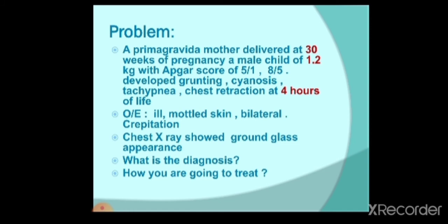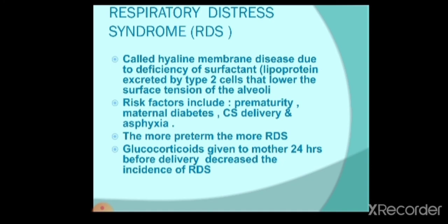Third problem: a primigravida mother delivered at 30 weeks of pregnancy, a male child weighing 1.2 kilos with an APGAR score of 5 at 1 minute and 8 at 5 minutes, who developed grunting, cyanosis, tachypnea, and chest retraction at 4 hours of life. Examination showed mottled skin, bilateral crepitations, and chest X-ray showed a ground glass appearance. This is a typical case of respiratory distress syndrome, also called hyaline membrane disease, due to deficiency of surfactant — a lipoprotein secreted by type 2 cells that lowers surface tension. Risk factors include prematurity, maternal diabetes, caesarean section delivery, and asphyxia. The more preterm the baby, the higher the risk of RDS.